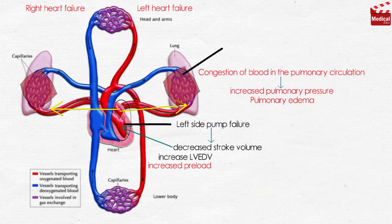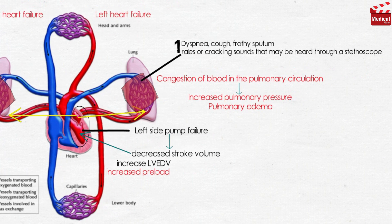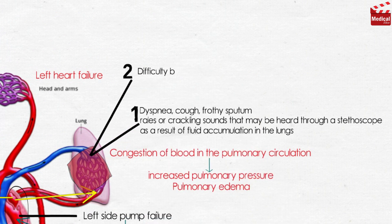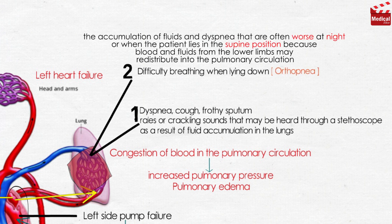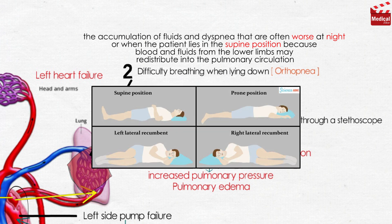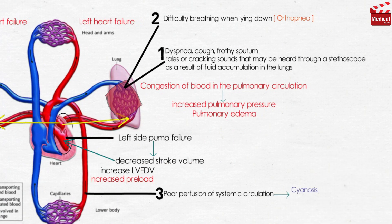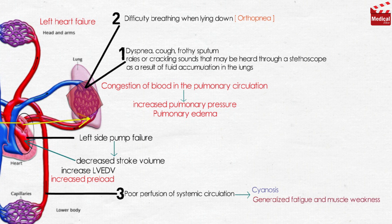Left heart failure results in dyspnea, cough, frothy sputum, and rales or crackling sounds heard through a stethoscope due to fluid accumulation in the lungs. Difficulty breathing when lying down, known as orthopnea, is also common. The fluid accumulation and dyspnea are often worse at night or in the supine position, because blood and fluids from the lower limbs redistribute into the pulmonary circulation. Poor perfusion of the systemic circulation may lead to cyanosis, generalized fatigue, and muscle weakness.